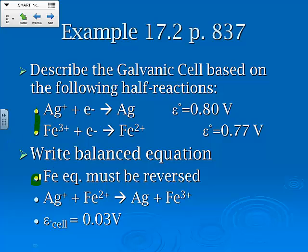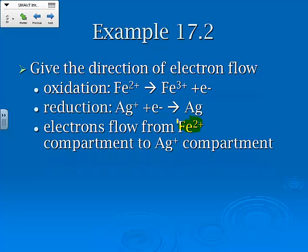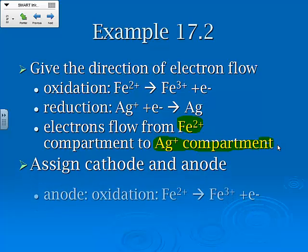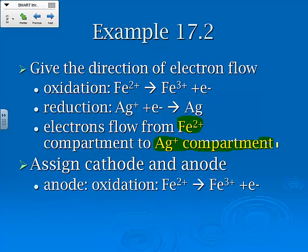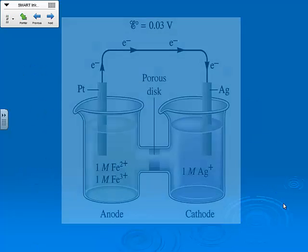So if we describe this galvanic cell, first of all, these two have reactions. We have to reverse the second one. So here is going to be our net reaction where we get 0.03. So the net ionic reaction is silver plus iron 2+ gives us silver solid and iron 3+. And if we were to give the direction of the electron flow, it's always the electrons will flow from the iron 2+ to the silver compartment. If we assign the cathode and the anode, the anode is going to be the oxidation again. So we've got the iron 2+ going to iron 3+. It's going to generate the electrons. The cathode is going to be the ones that need the electrons. So that's why we get it to flow from the anode to the cathode.